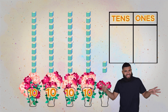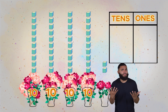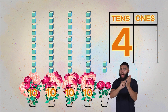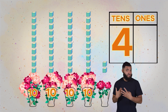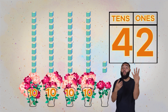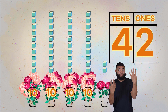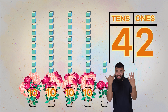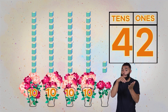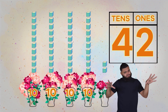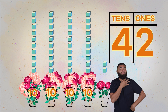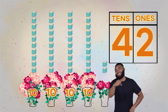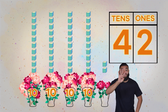Let's write the number of groups of ten in the tens place, and the leftovers in the ones place. Given the skills we have learned, how many flowers are there all together? That's right! There are forty-two.